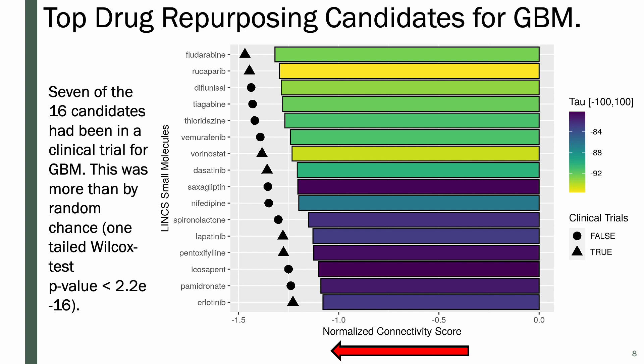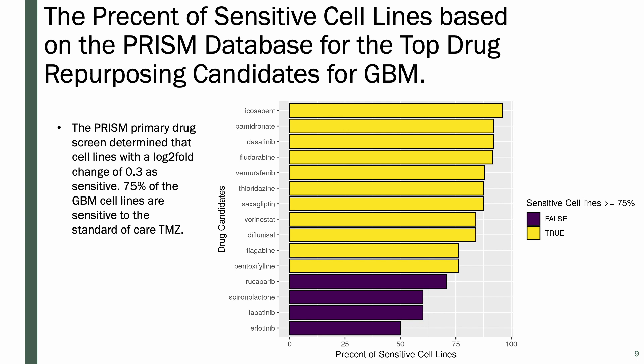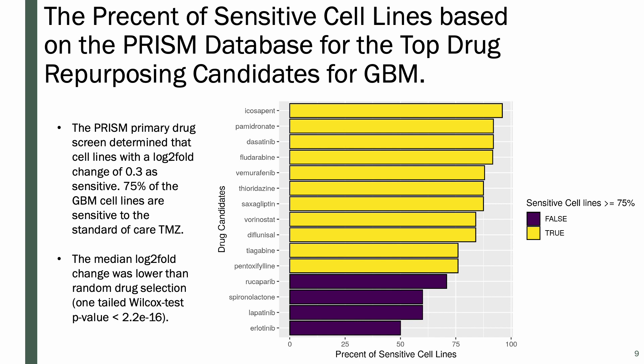We also looked at the PRISM database, which had screened several different cancer cell lines and examined the sensitivity of these cell lines to different drugs. They found that for the standard treatment temozolomide, 75% of the cell lines were sensitive. Looking at our drug candidates, we wanted to see how many were equal to or greater than 75% sensitivity, and several of the drug candidates met this threshold, indicated by yellow in the figure. We also evaluated this against random drug selection and found that our candidates performed better than by random chance.